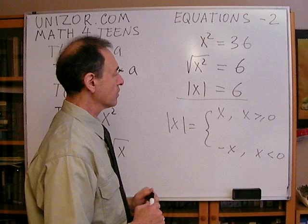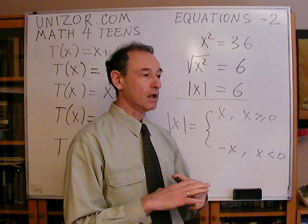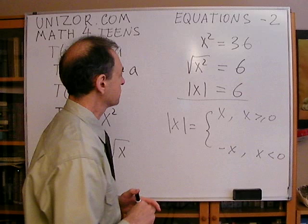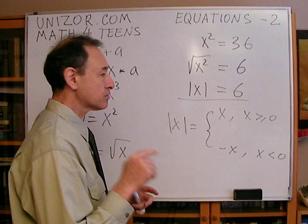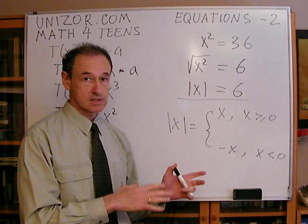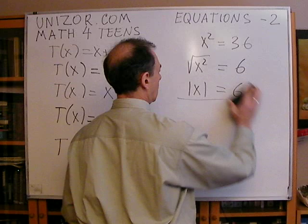With square roots, the situation is more complicated because you must think of the square root not as any number that, when squared, gives the value under the radical, but only the non-negative value. That restriction makes the square root an invariant transformation, but only within its domain of non-negative numbers and its corresponding codomain.